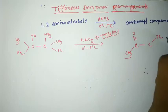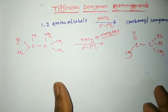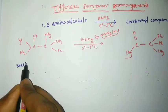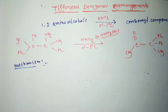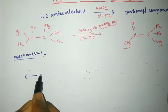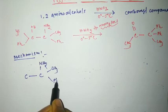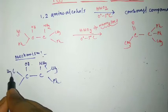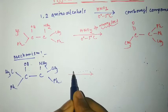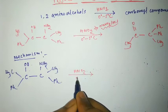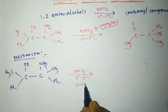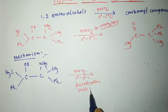Then we get the carbonyl compound like this. Now let us see its mechanism. This is a 1,2-amino alcohol. In presence of NaNO2 and temperature 0 to 5 degrees Celsius, diazotization takes place.